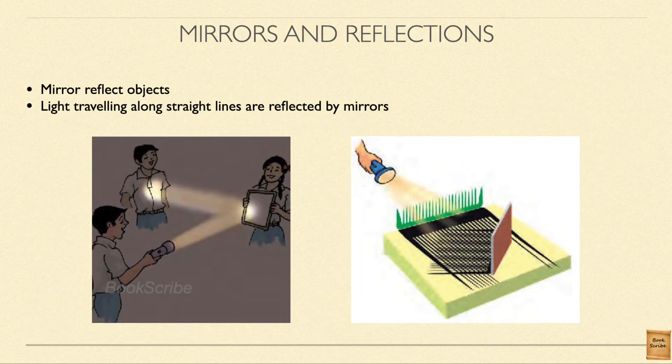Now we will see about mirrors and reflections. You must have already heard about mirrors where you can see your face — the image falls on the mirror, and that is what we call a reflection. Similarly, any other objects can also be seen on the mirror. Reflections can also be seen on water bodies like ponds, rivers, or a lake when the water is stationary — you can see images of buildings or nearby trees on the water.